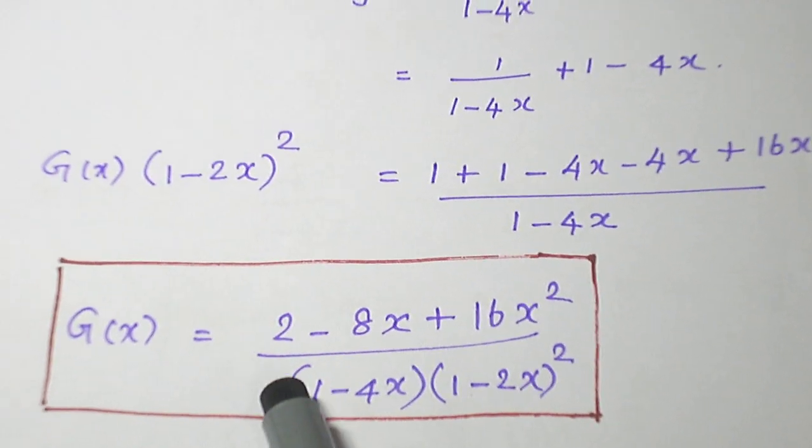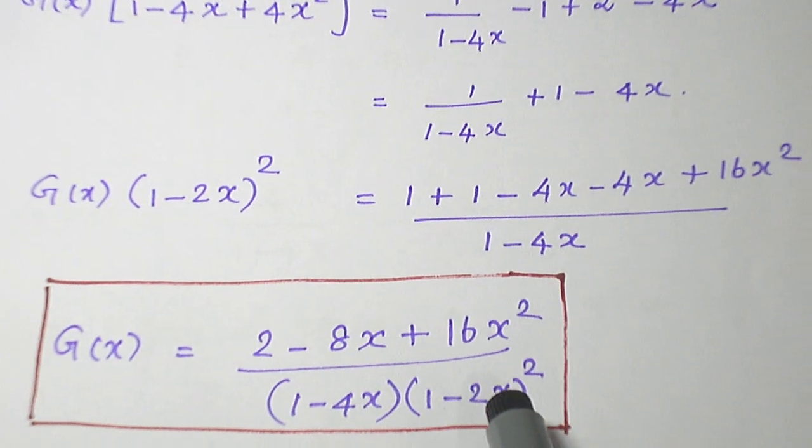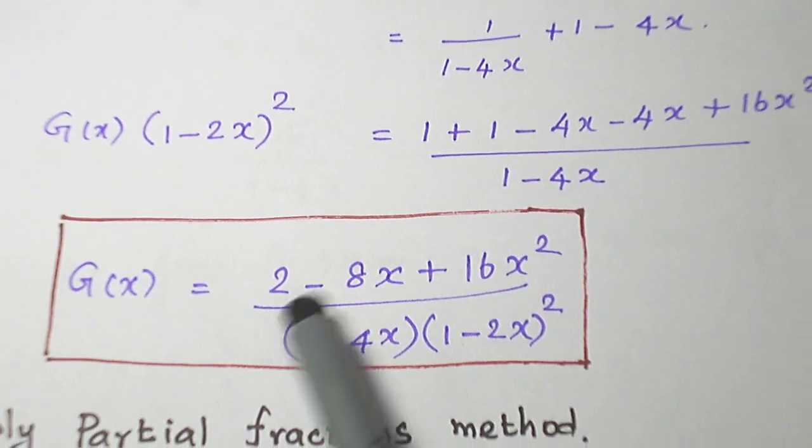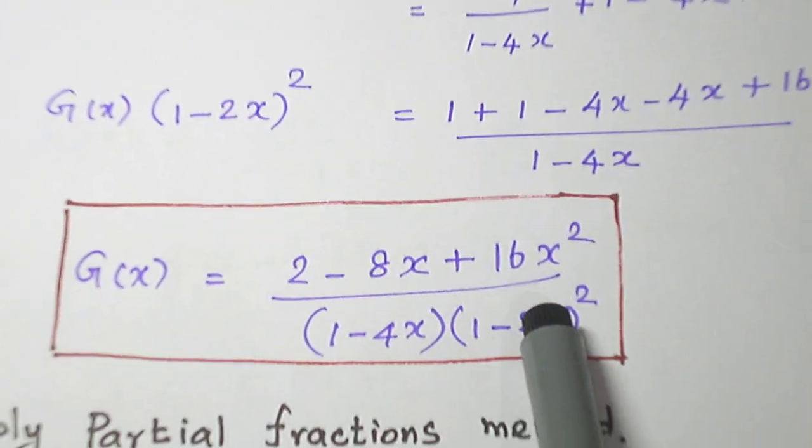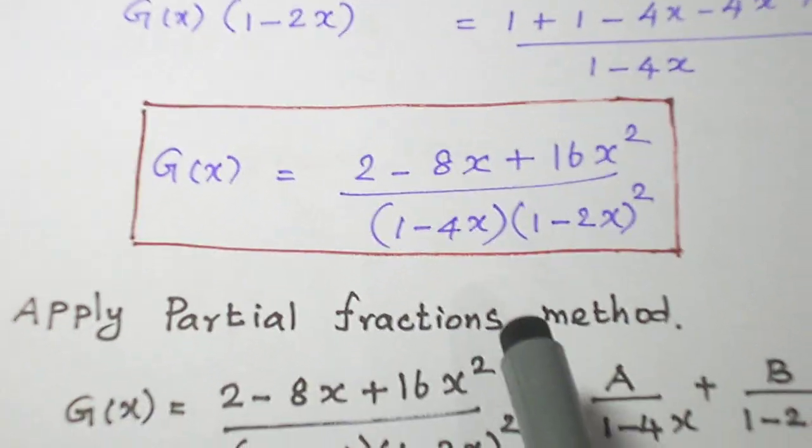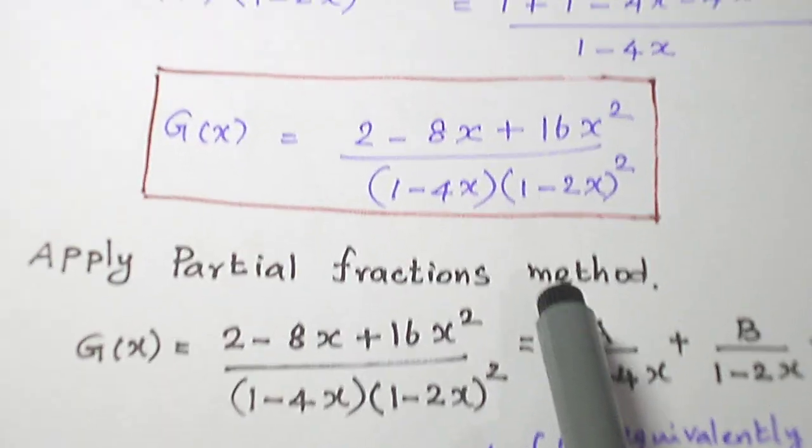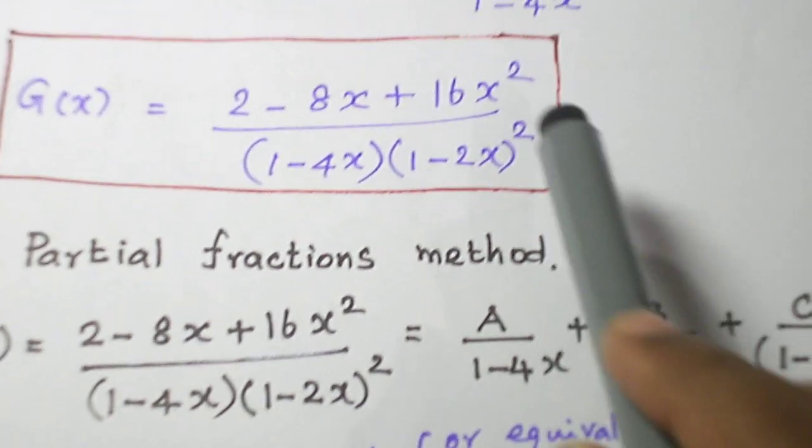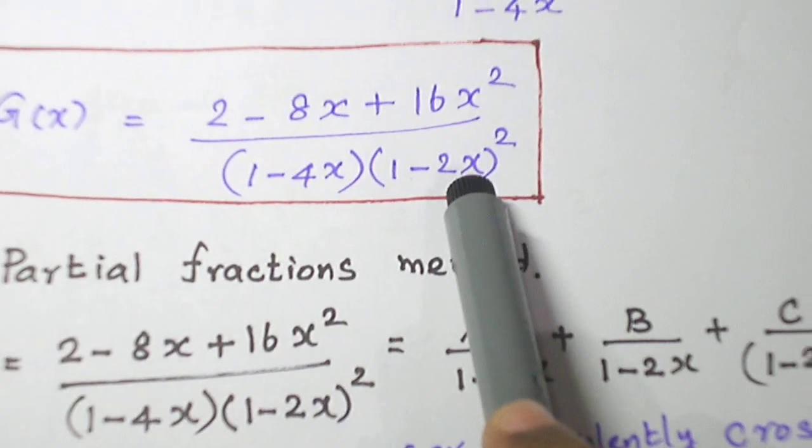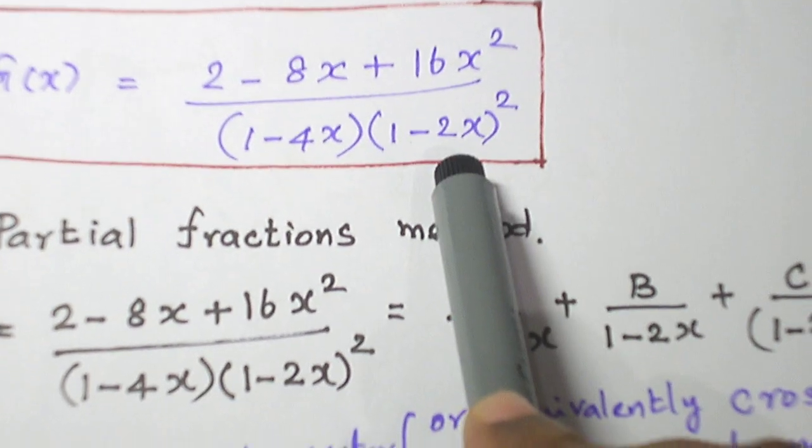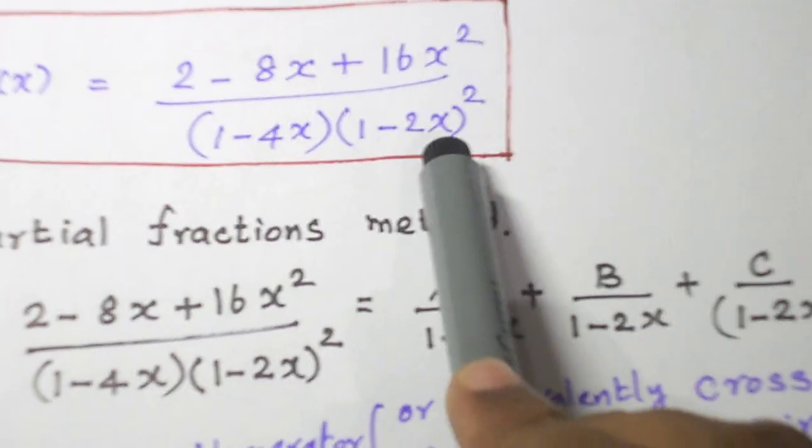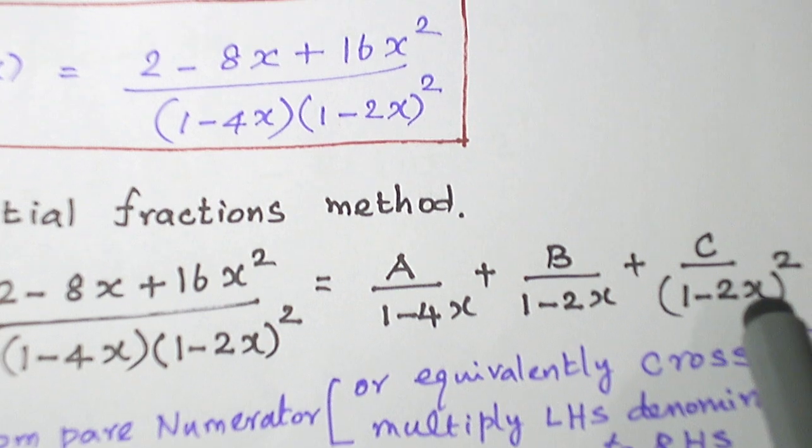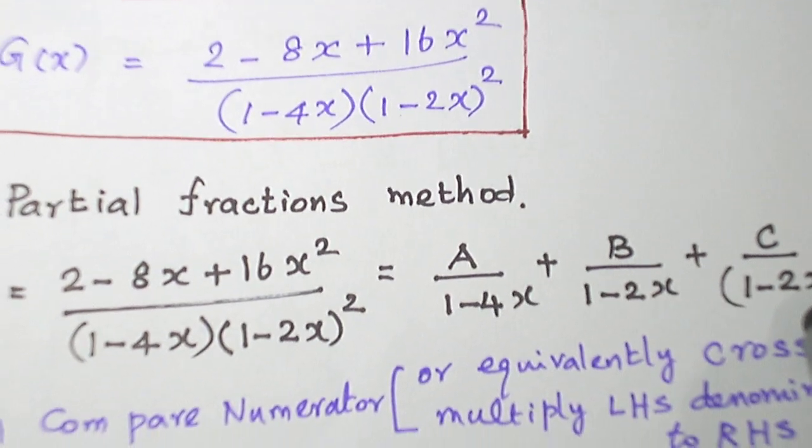So, we get G(x) as a rational function in terms of x. Let us apply partial fraction method for this. This is a linear term, degree 1. So, A/(1-4x). Here we have linear term with degree 2. So, B/(1-2x) + C/(1-2x)^2 is the partial fraction.